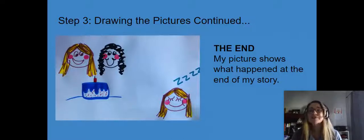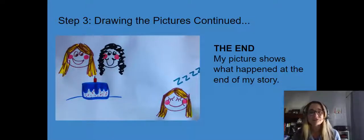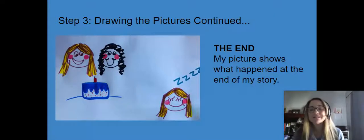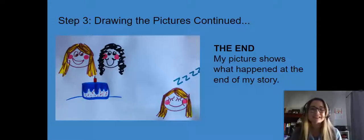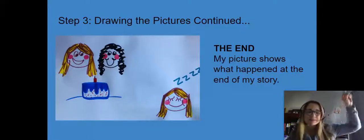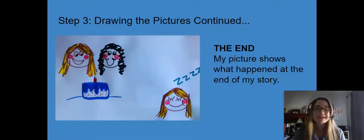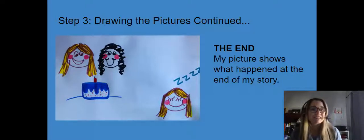The next part is drawing the pictures for the end of my story. At the end, everybody has rosy cheeks because we got a little sunburn at the beach. There's my friend and there's me, and there's a birthday cake because we had some cake at the end of the story. And then you can see my little face in the corner with some Z's — that means I was really tired, because it was a really tiring but fun day at the beach.